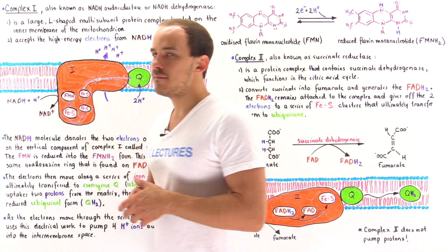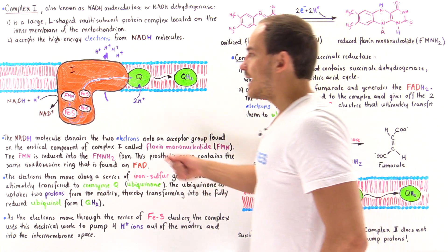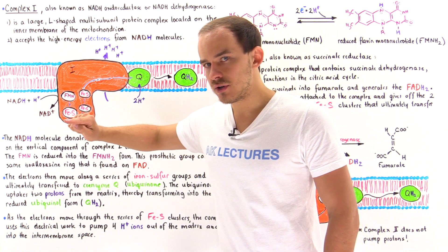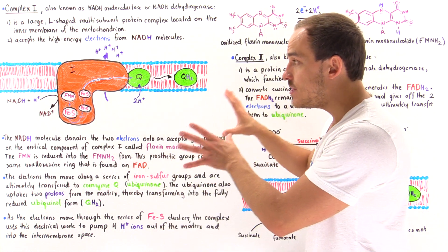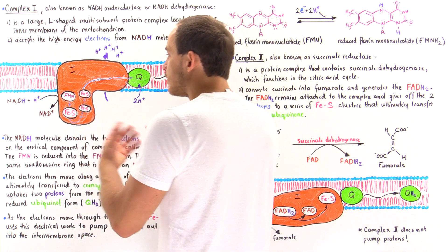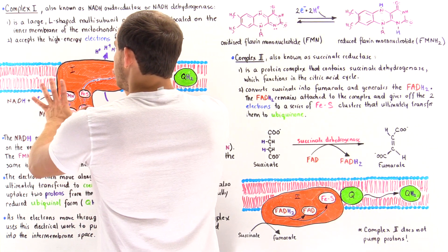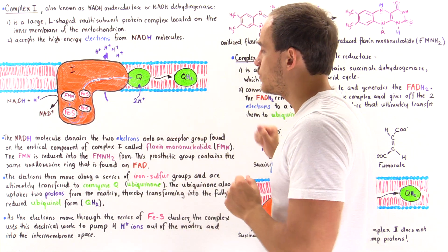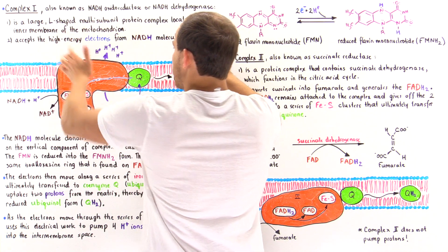Once electrons are abstracted by FMN, they move along a series of groups known as iron-sulfur clusters. As electrons flow along these groups, that flow constitutes an electric current, which powers the pumping of H+ ions. Complex 1 establishes a proton electrochemical gradient that will be used by ATP synthase to form ATP. As electrons ultimately end up on ubiquinone, four H+ ions are pumped by complex 1 from the matrix to the intermembrane space.